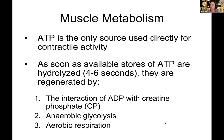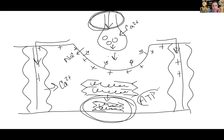Next we'll walk through muscle metabolism — how are you generating ATP in your muscles? ATP is essential: every cross-bridge formation requires it. Your muscles do store ATP, but they burn through those stores within four to six seconds of activity. Since we're usually moving for much longer than that, you have to have other ways to make ATP.